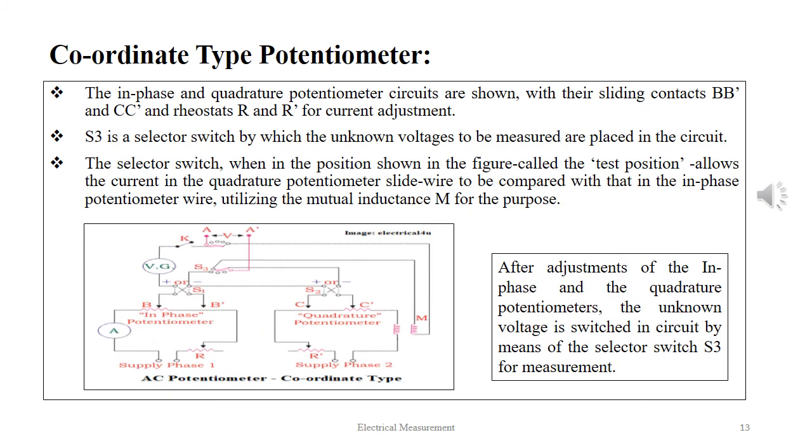The in-phase and the quadrature potentiometer circuits are shown with the sliding contacts BB' and CC' and rheostats R and R' for current adjustment. S3 is the selector switch by which the unknown voltages to be measured are placed in the circuit.